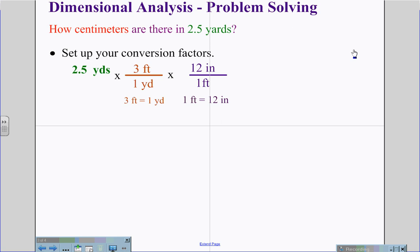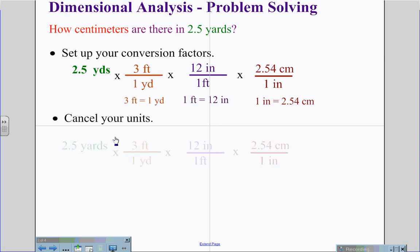Now we're going to compare feet to inches. 12 inches is equal to one foot. Again, foot in the denominator to cancel, inches in the numerator. And lastly, 2.54 centimeters for every one inch. Inches in the denominator to cancel. And centimeters because that is the desired unit we are looking for. Now we're going to cancel our units. Yards will cancel with yards. Feet will cancel with feet. And inches will cancel with inches, leaving us with an answer in centimeters.